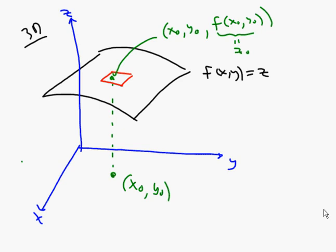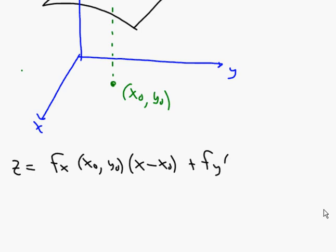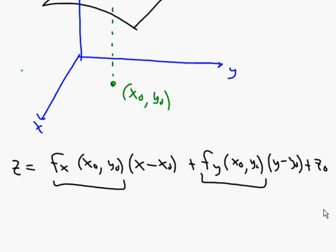So what does the equation of that tangent plane look like? It's: z equals the partial derivative with respect to x, evaluated at x₀ comma y₀, times x minus x₀, plus the partial derivative with respect to y, evaluated at x₀ comma y₀, times y minus y₀, plus z₀. You have two slopes — a slope in the x direction and a slope in the y direction.